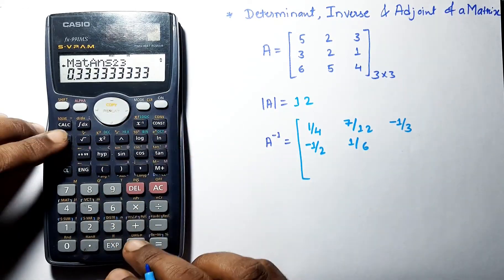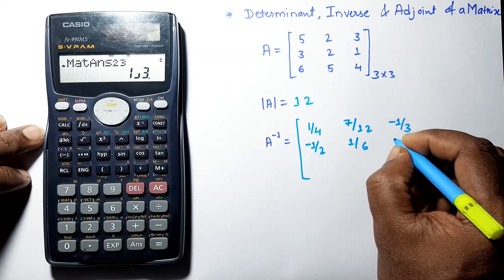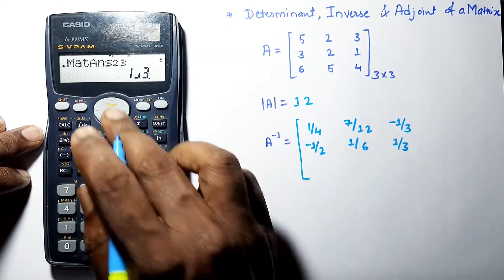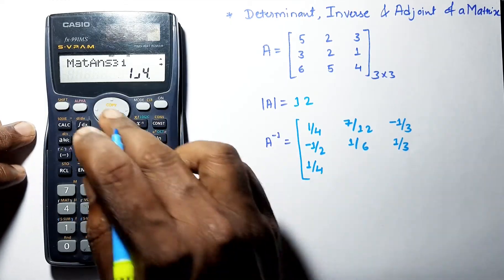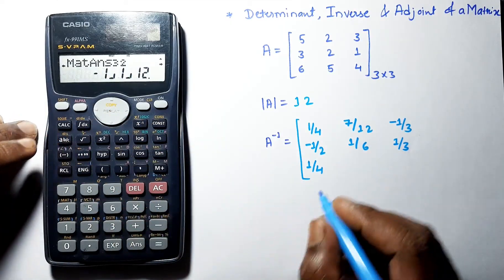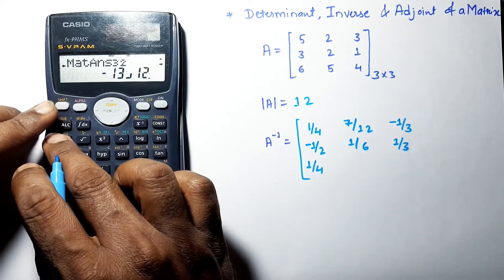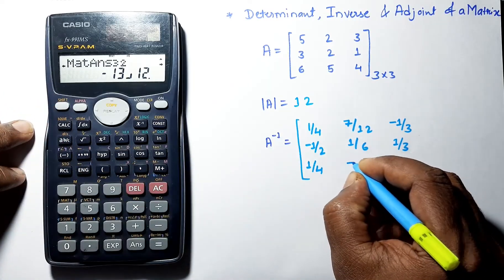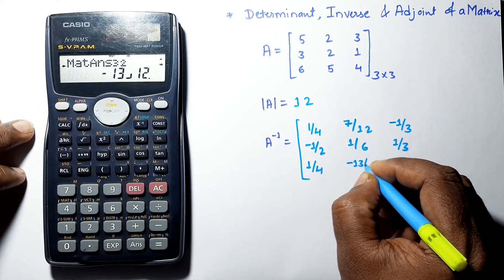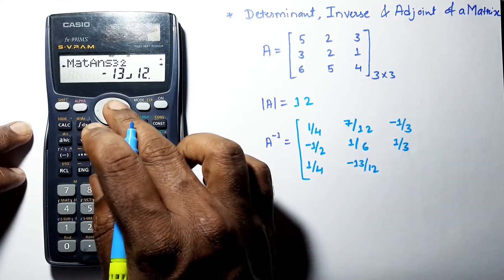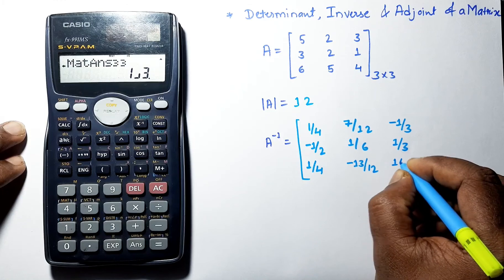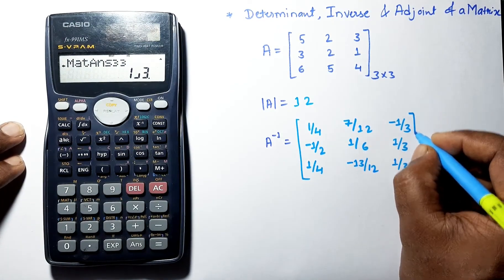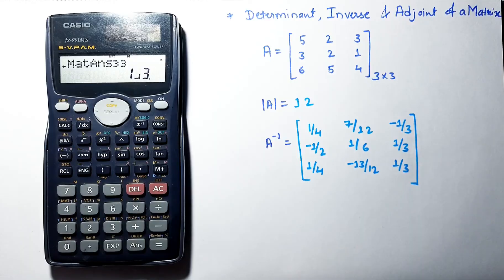Continuing: 1/3, then 1/4, then −13/4, and the next value is 1/3. Now we have the inverse of the matrix A.